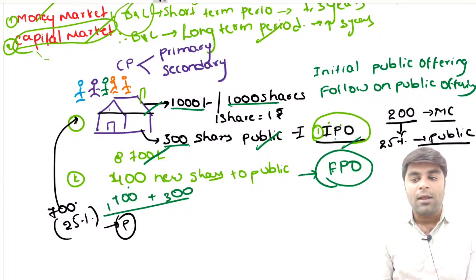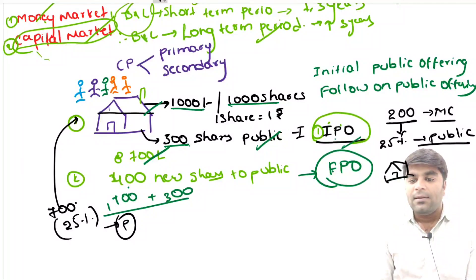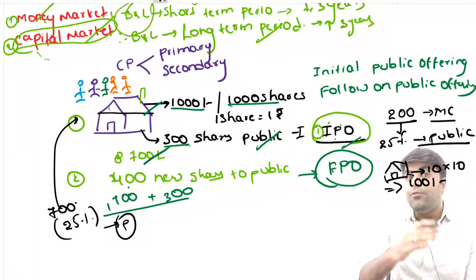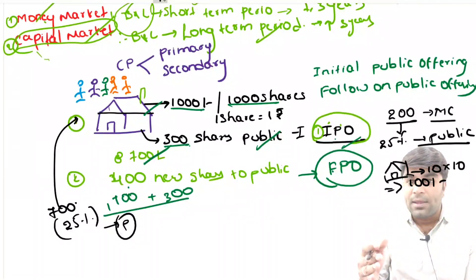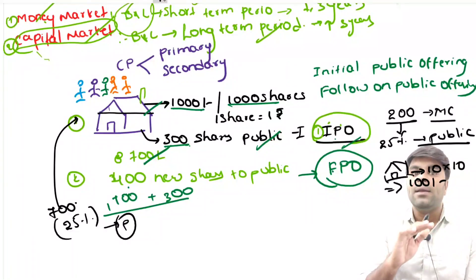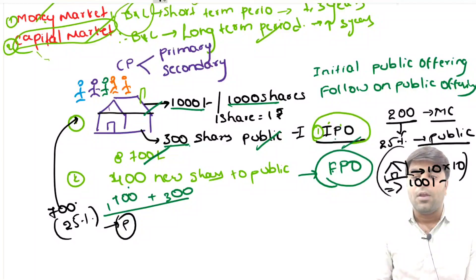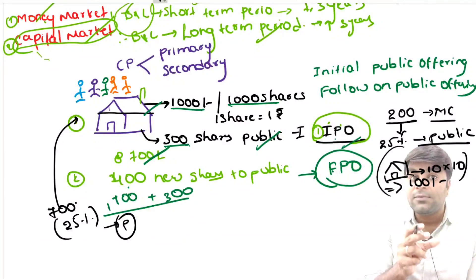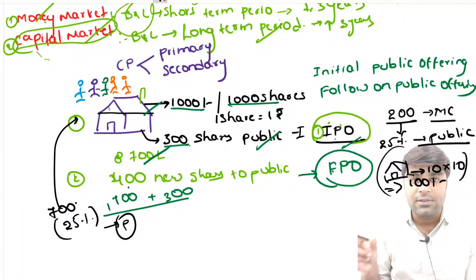What is the meaning of top 200 companies by market capitalization? Simply, imagine a company has issued 10 shares and each share price is 10 rupees, so automatically the market capitalization of this company is 100 rupees. Market capitalization means: number of shares issued by a company multiplied by their prices. According to market capitalization, top 200 companies need to maintain at least 25% of their shares with the public.